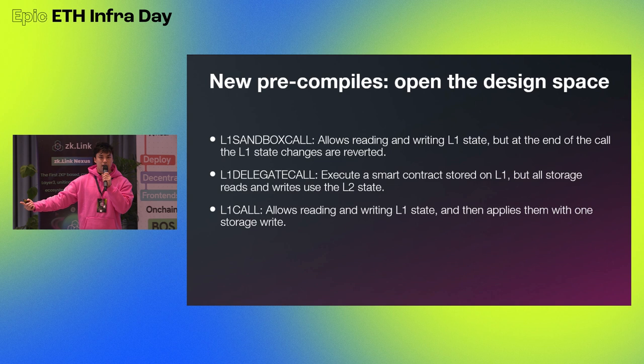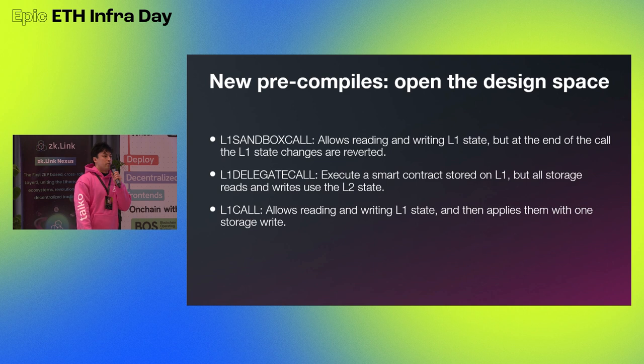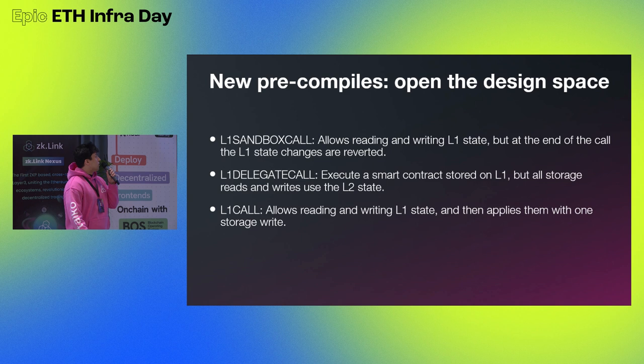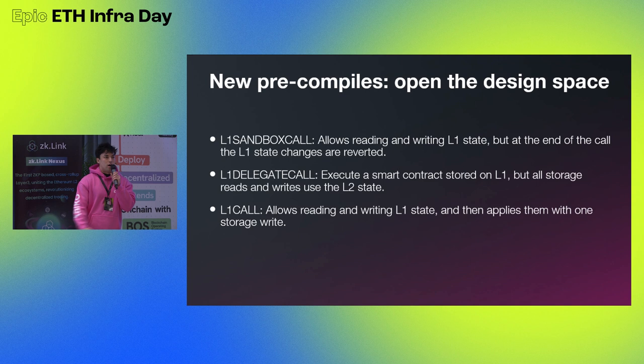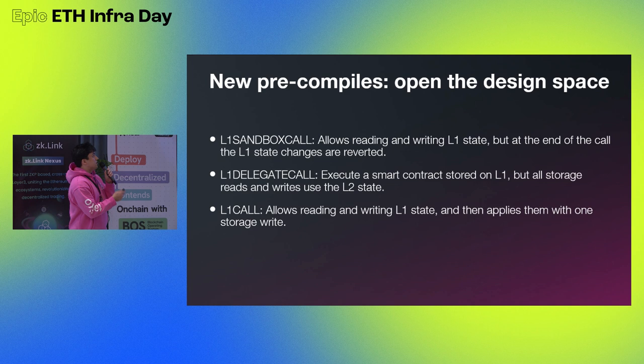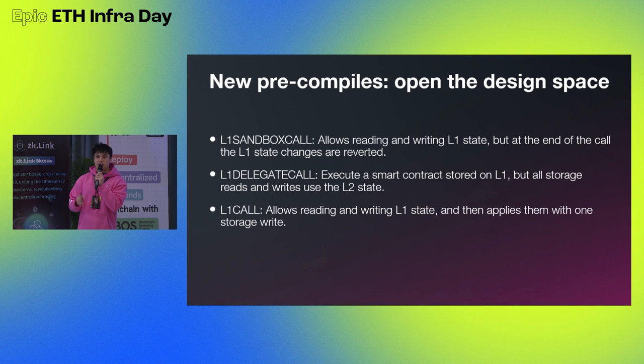We'll talk about some precompiles that will enable the idea of offering scale to L1 apps without asking them to redeploy. The three precompiles are: L1 Sandbox Call, L1 Delegate Call, and L1 Call. The reasoning is: if you're an L2 node, you need access to the data availability layer where you're posting your rollup transactions. L2 nodes always have access to some L1 node — either over RPC or by running one themselves. Because L2 nodes already have access to an L1 node, we are suggesting you can call that L1 node directly.